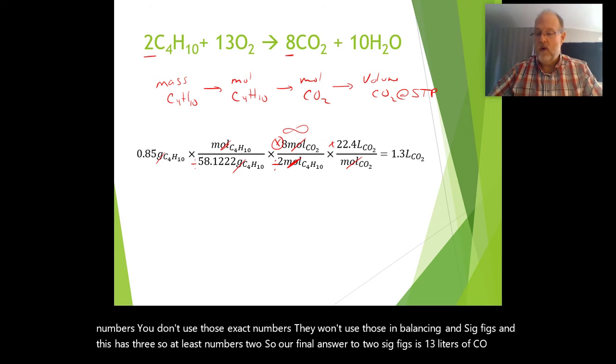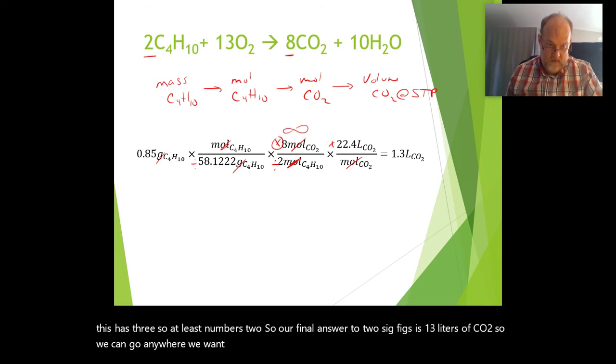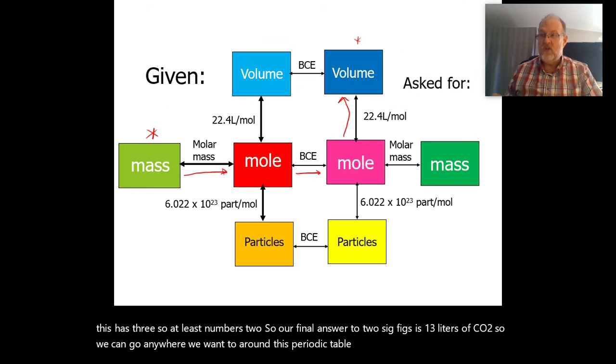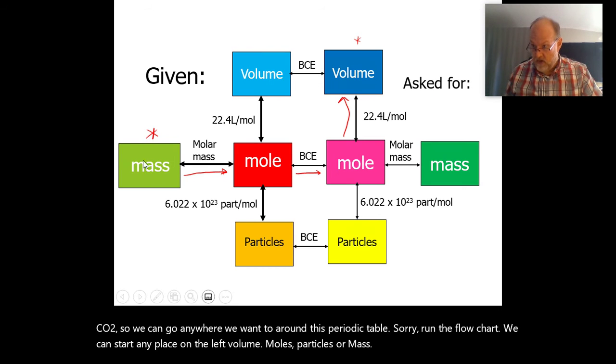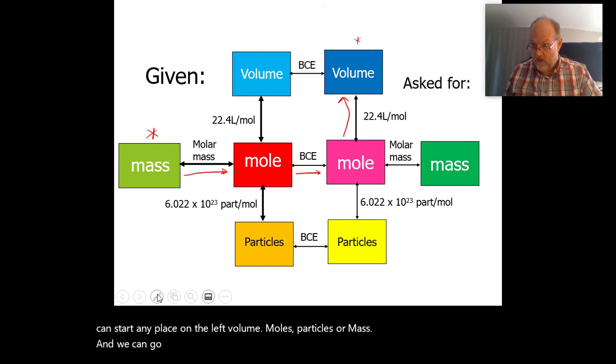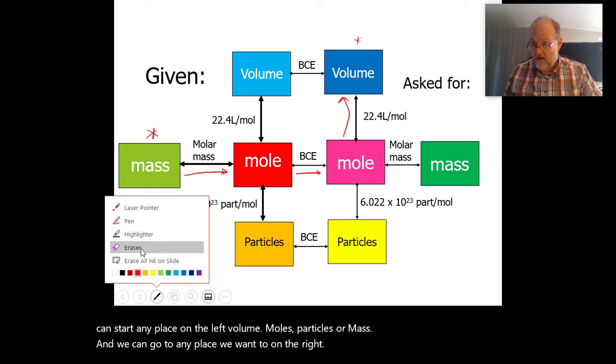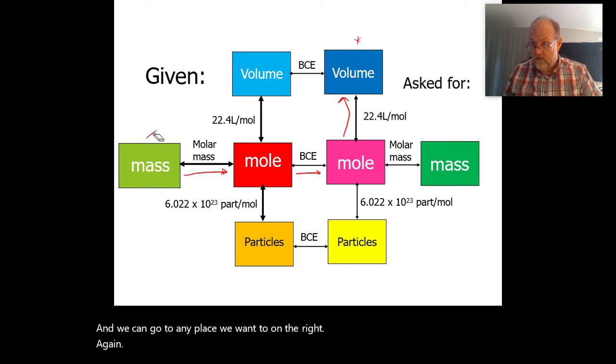So we can go anywhere we want to around this flow chart. We can start any place on the left: volume, moles, particles, or mass. And we can go to any place we want to on the right: volume, moles, particles, or mass. We can do anything we need to. Let's try another one.